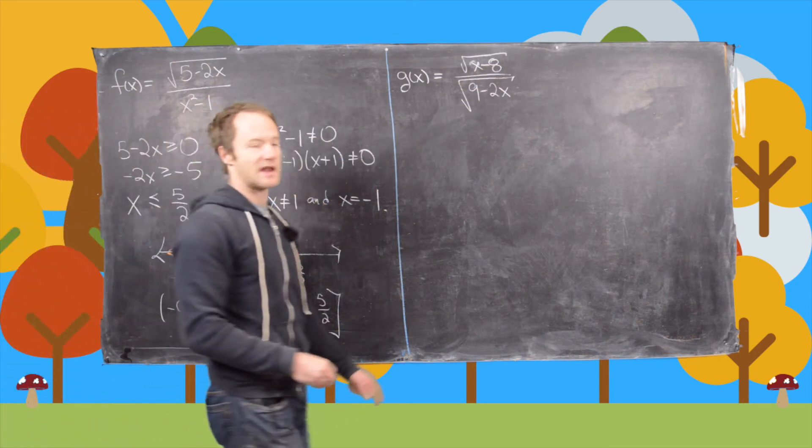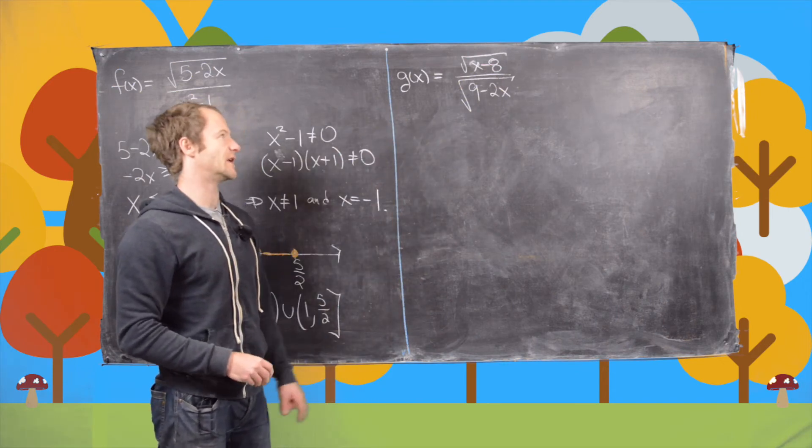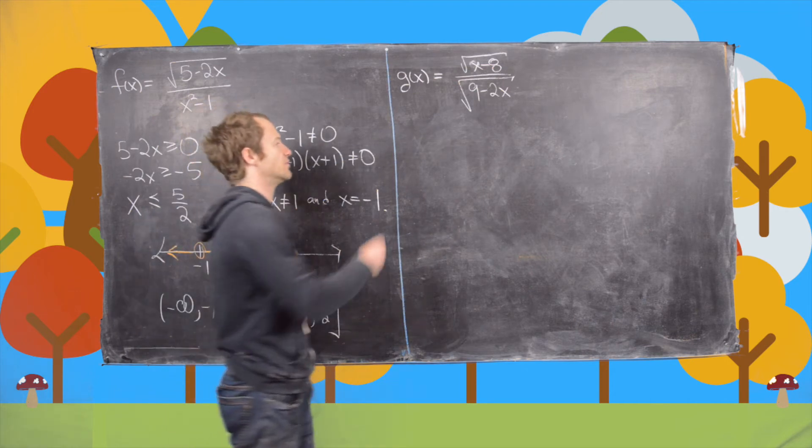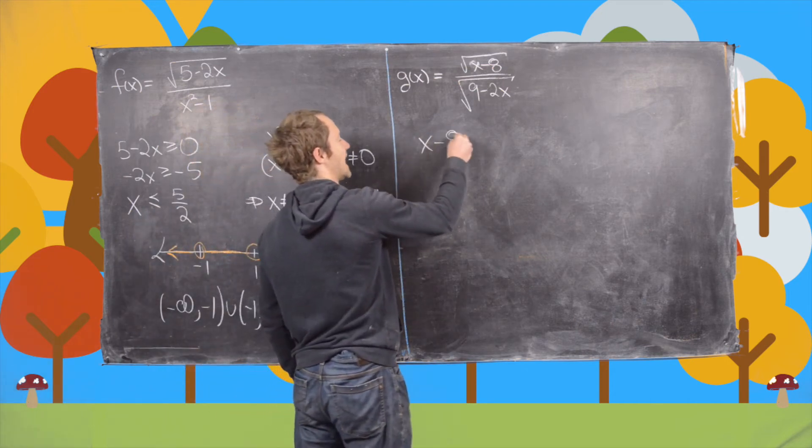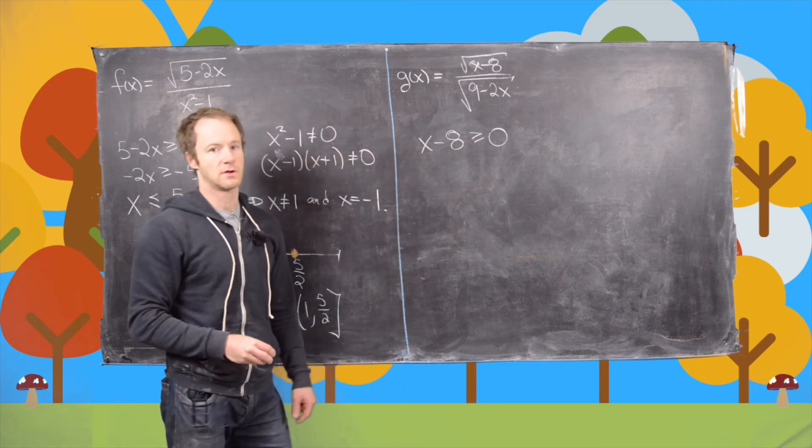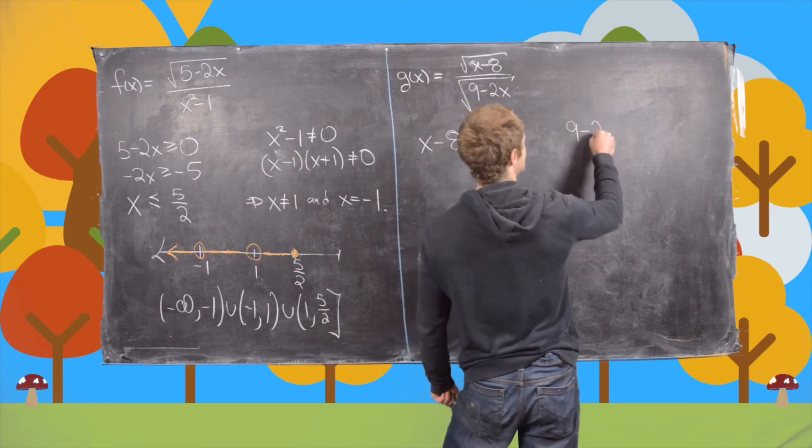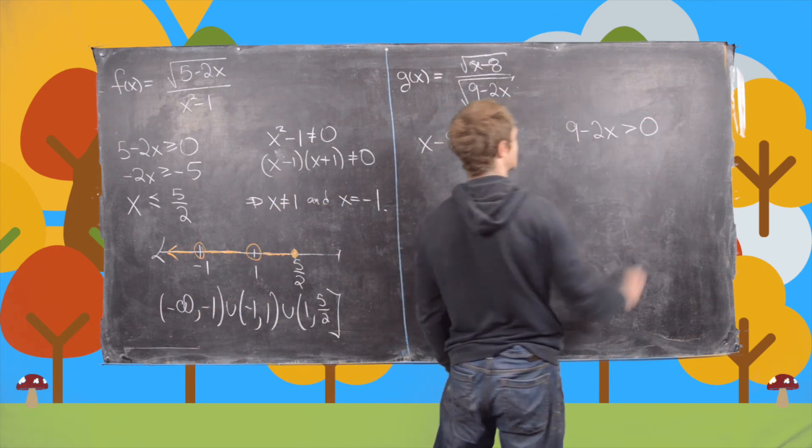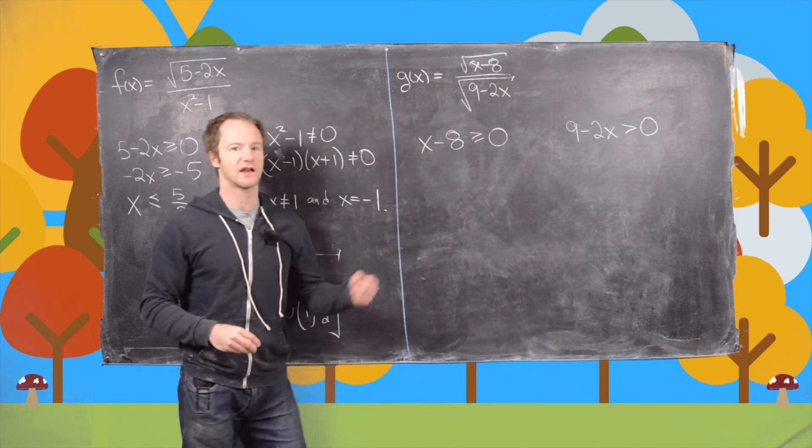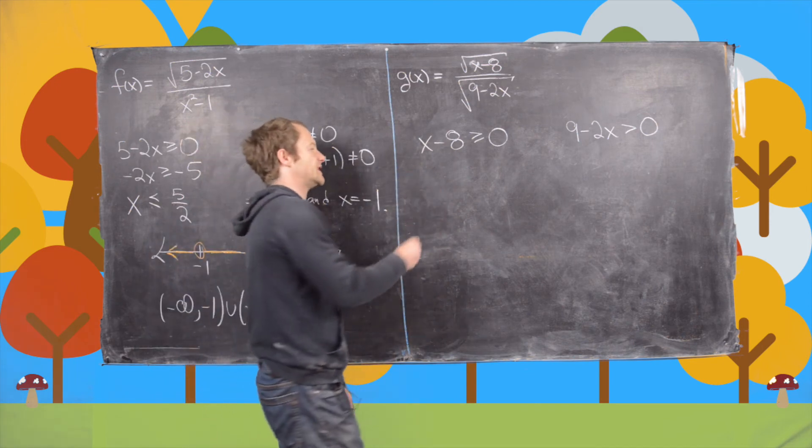Now let's look at the domain of this function. Notice we've got two things under square roots. One of them is in the denominator. So let's start with the one in the numerator. That tells us that x minus 8 needs to be bigger than or equal to 0. And then we have 9 minus 2x has to be strictly bigger than 0, so it's not allowed to be equal to 0 because that would put a 0 in the denominator.